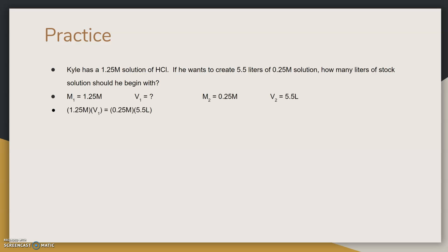Now we substitute into our starting equation, where 1.25 M times V1 equals 0.25 M times 5.5 liters. Now we isolate the variable, which is V1 in this case. So we divide both sides by 1.25.